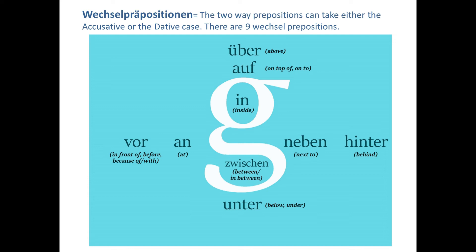Here in this pictorial graph you can see these nine prepositions, and we will go through them one by one. On the top we have 'über,' which means above. The big 'G' stands for object or Gegenstand. Then we have 'auf,' which means on top of or onto.